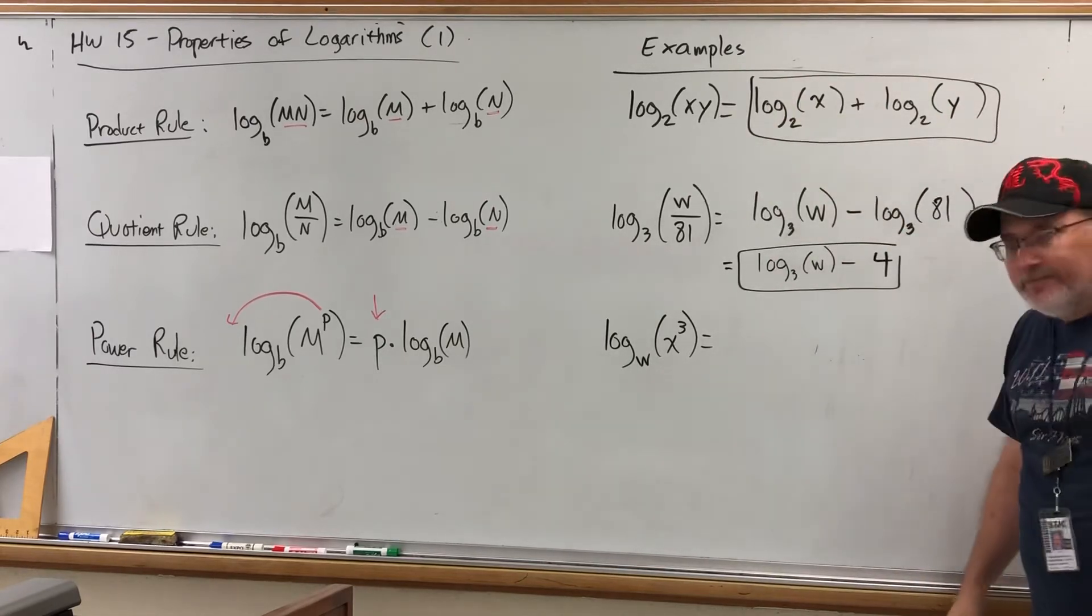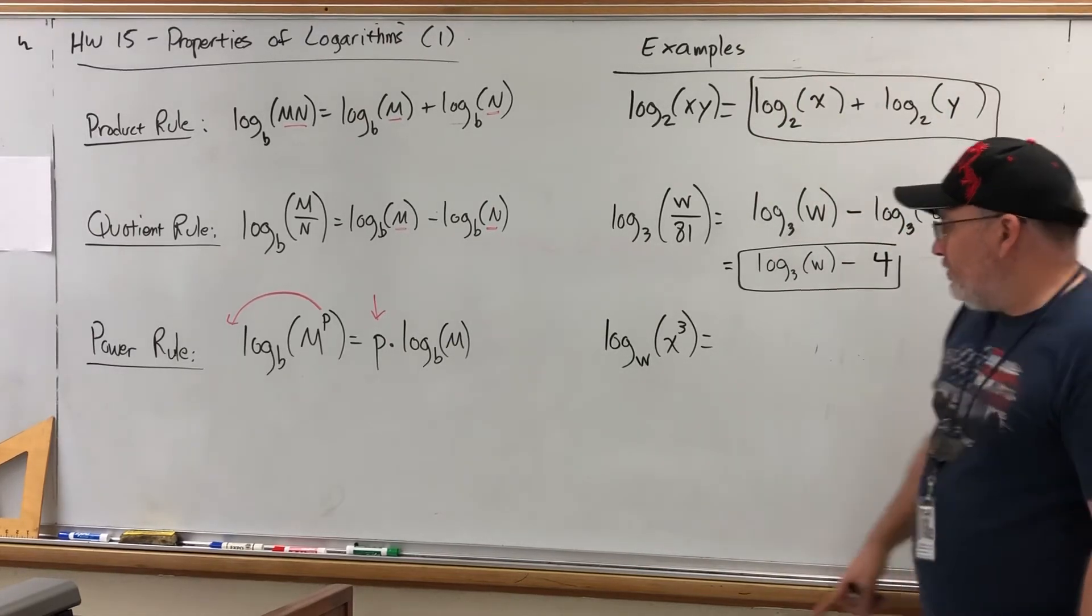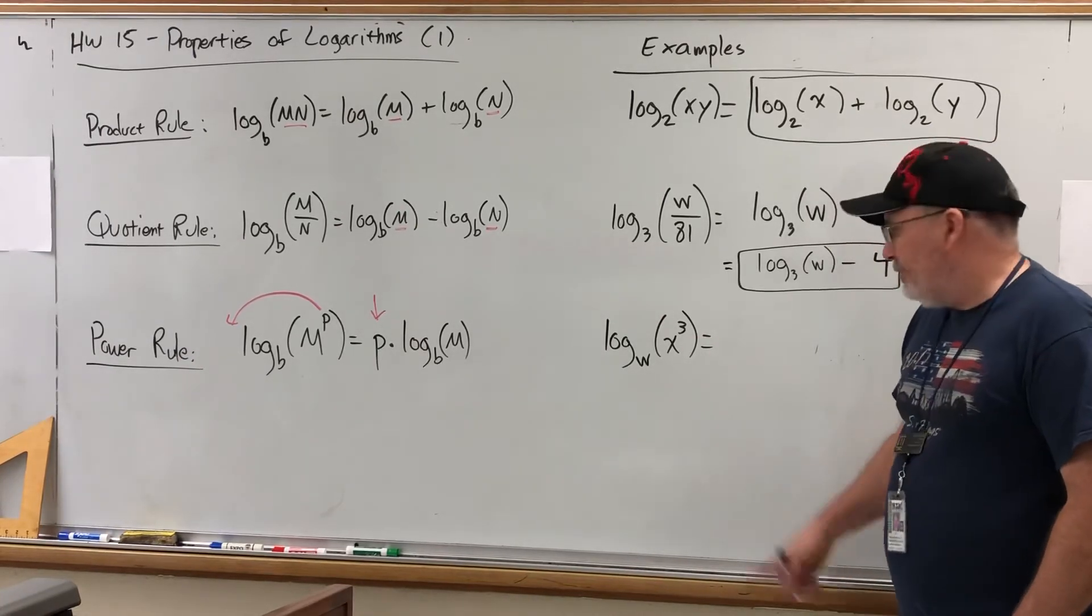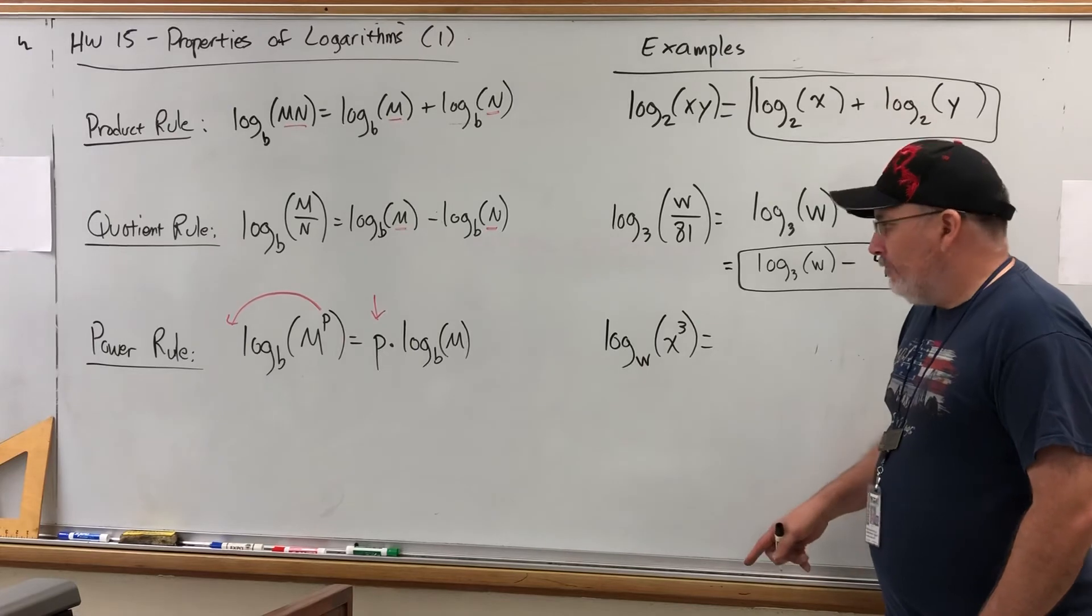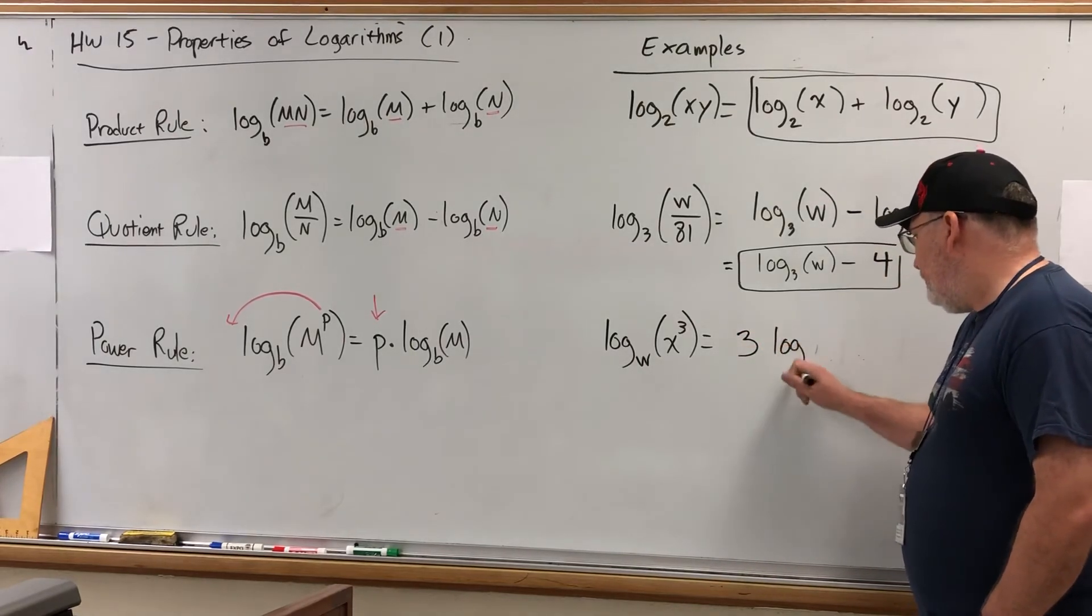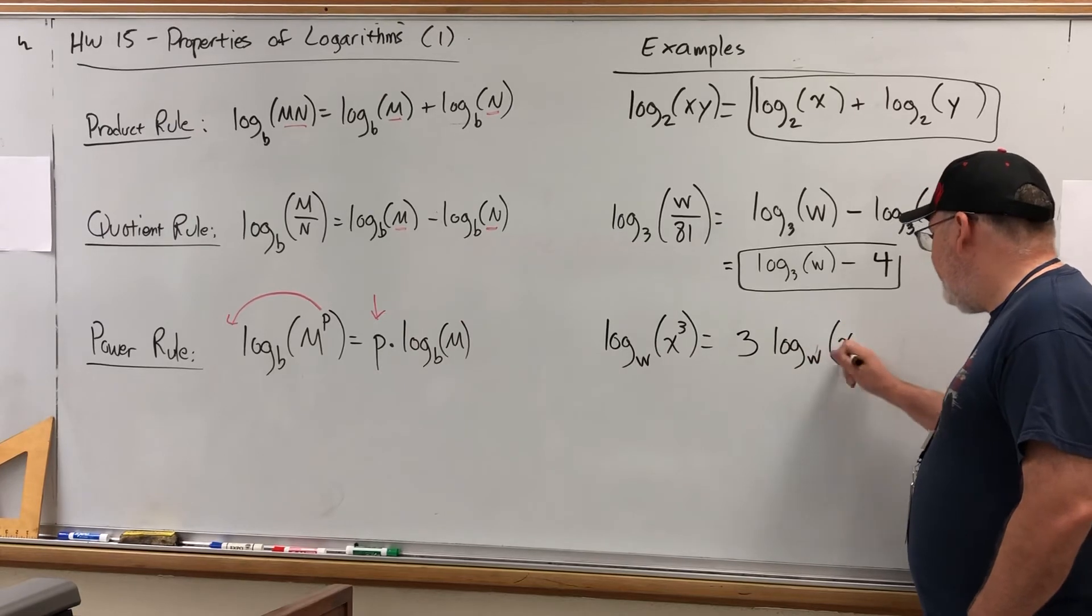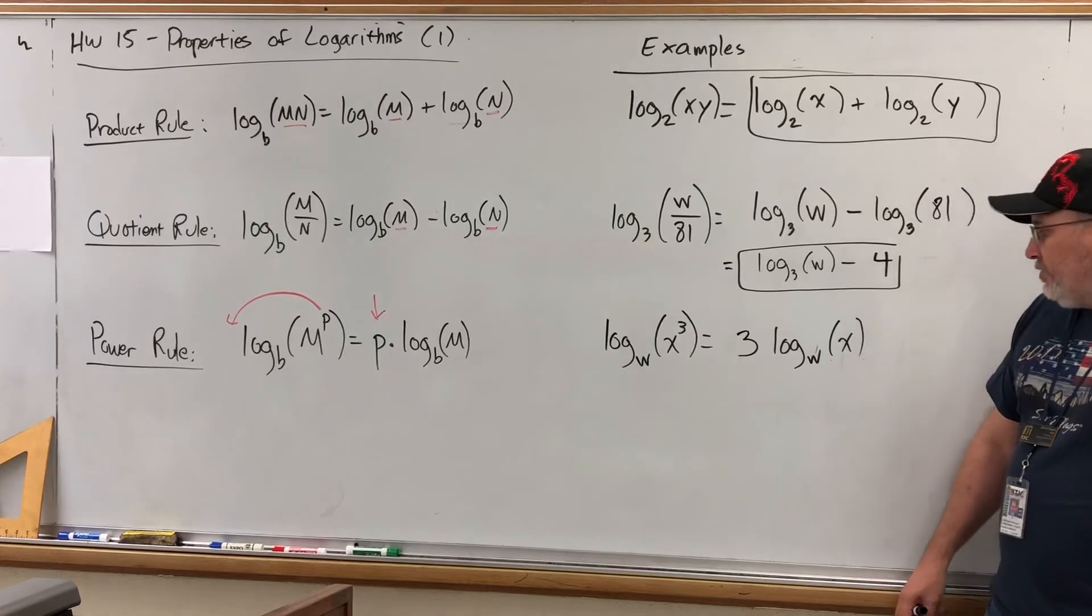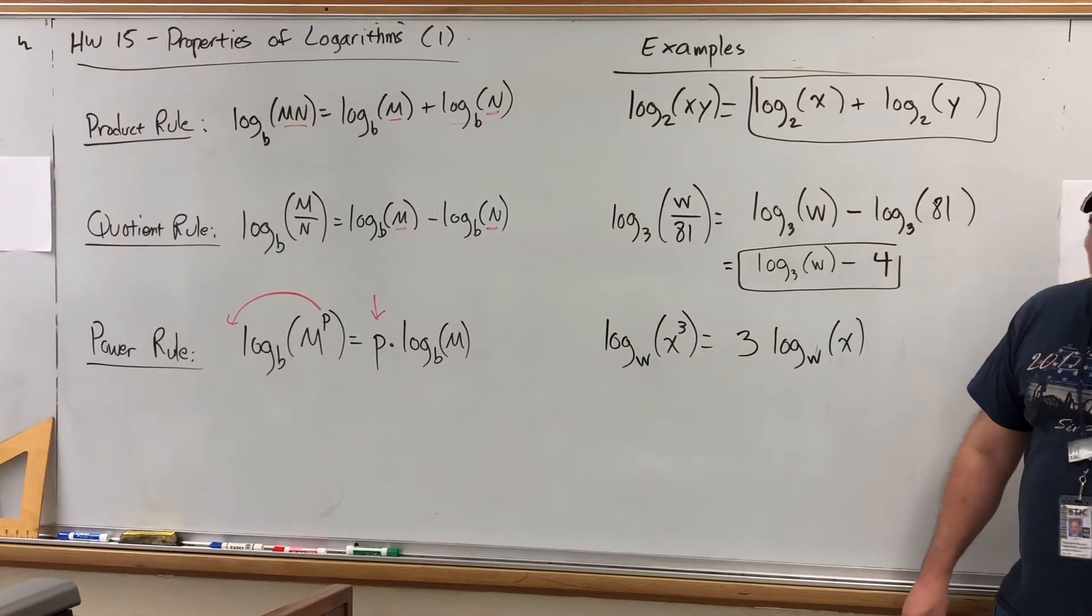Last one's easy. It's the logarithm of an argument with the power on it, and as long as the power belongs to the whole argument that does, the power rule says you can take the power off and put it in front. Keep the same base. So log base w of x to the third power equals 3 log base w of x.